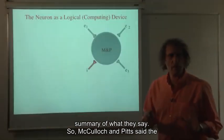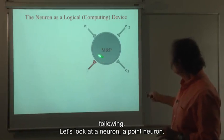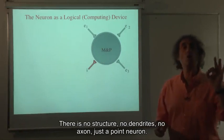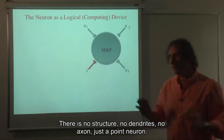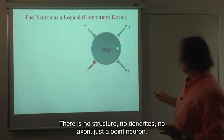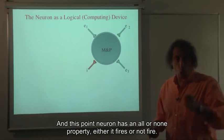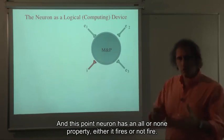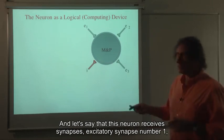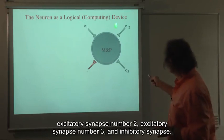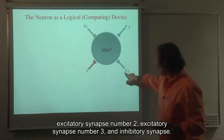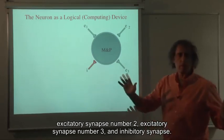So McCulloch and Pitts said the following. Let's look at a neuron, a point neuron. There is no structure, no dendrites, no axon, just a point neuron. And this point neuron has an all or none property, either it fires or not fires. And let's say that this neuron receives synapses, excitatory synapse number one, excitatory synapse number two, excitatory synapse number three, and inhibitory synapse.